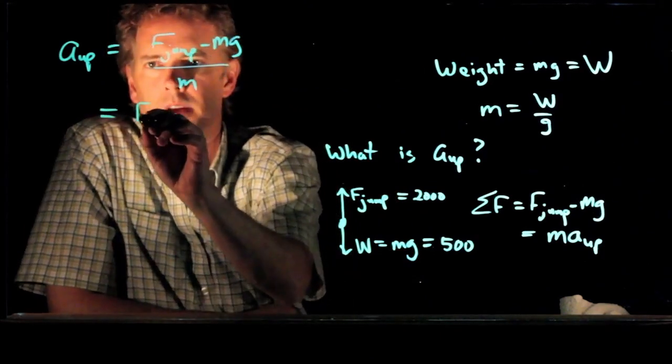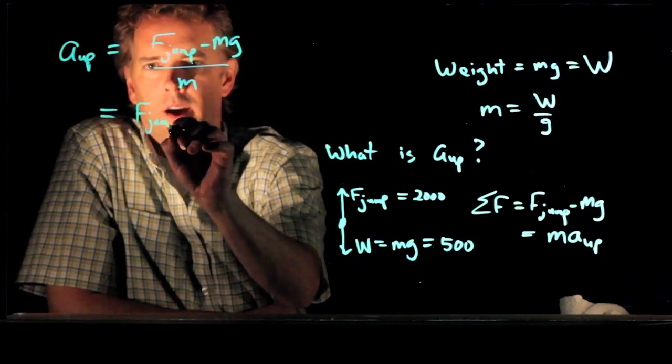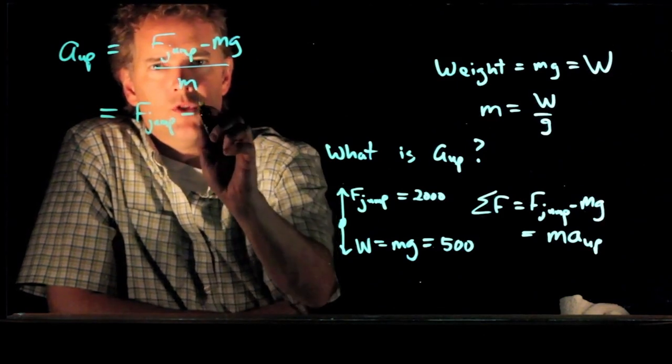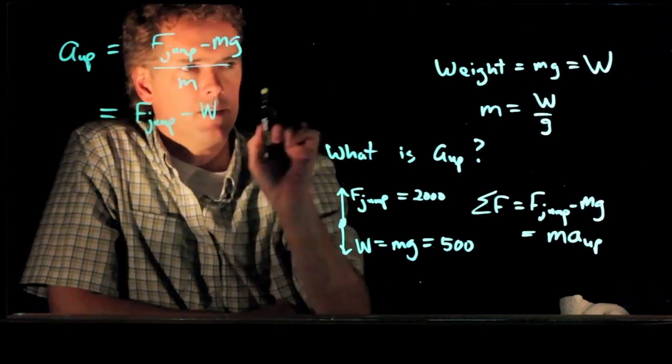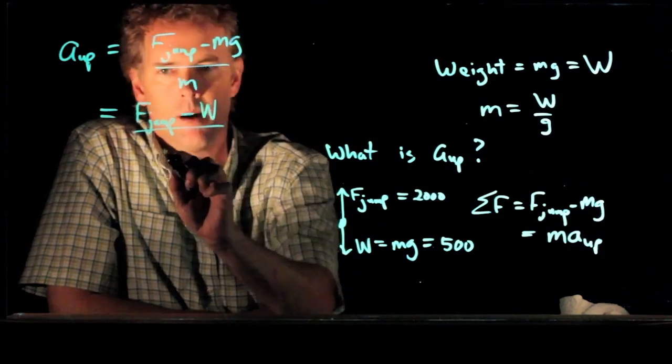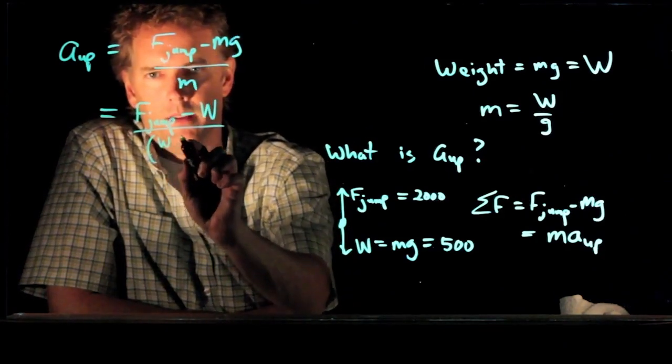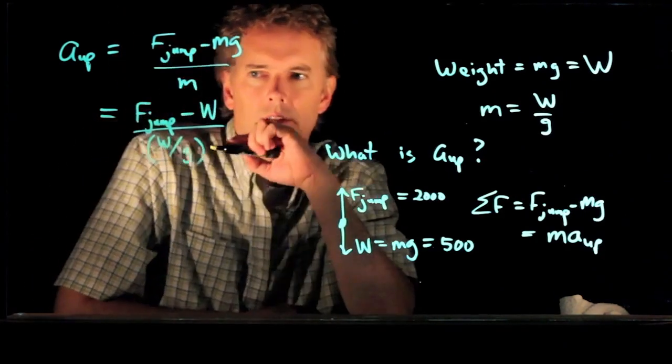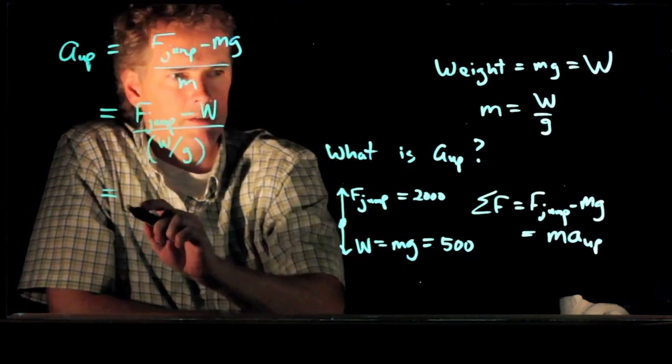F_jump, we are given that from the graph. mg is of course just their weight W. m is apparently their weight divided by g. And now we can plug in all those numbers.